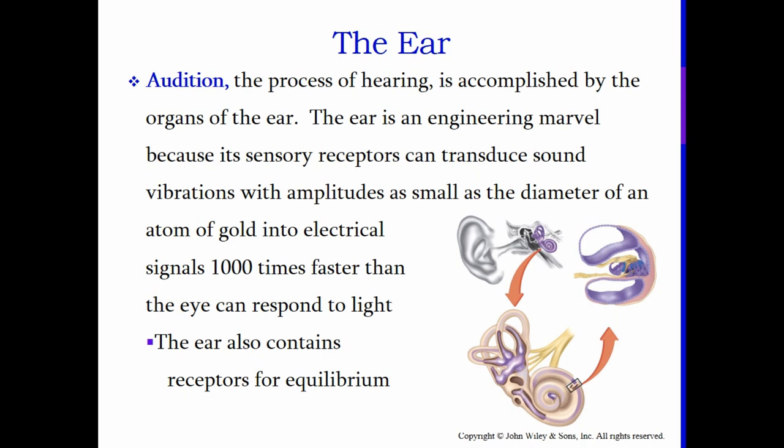Typically when we think of the ear, we think of the fleshy appendage on the sides of our heads, but that is just a small part. There's a whole lot more going on inside. The ear is an engineering marvel because its sensory receptors can transduce sound vibrations with amplitudes as small as the diameter of an atom of gold into electrical signals one thousand times faster than the eye can respond to light. The ear also contains receptors for equilibrium and balance.